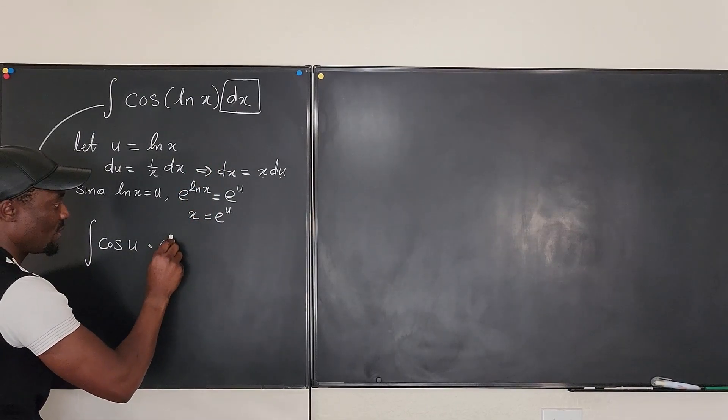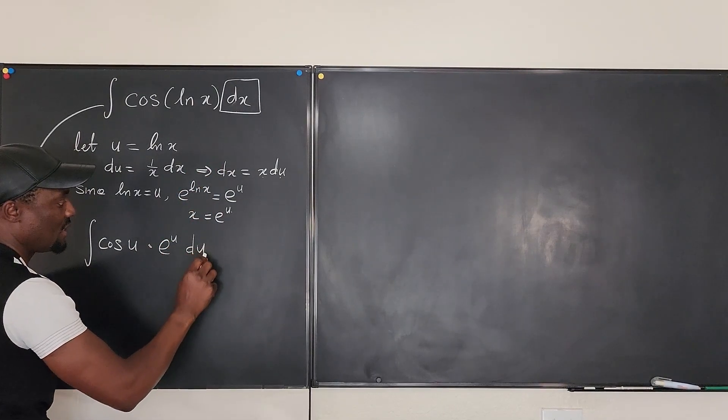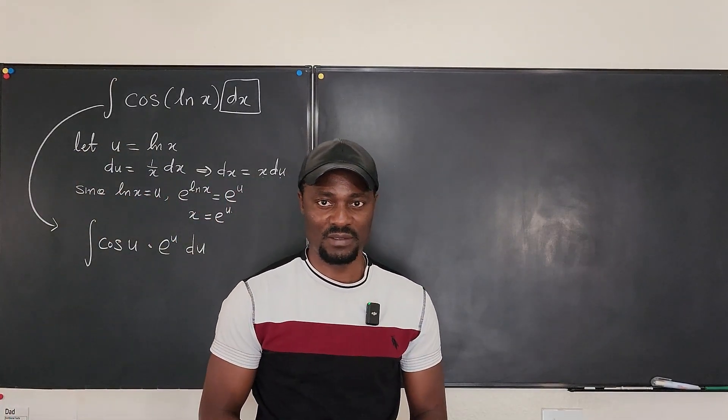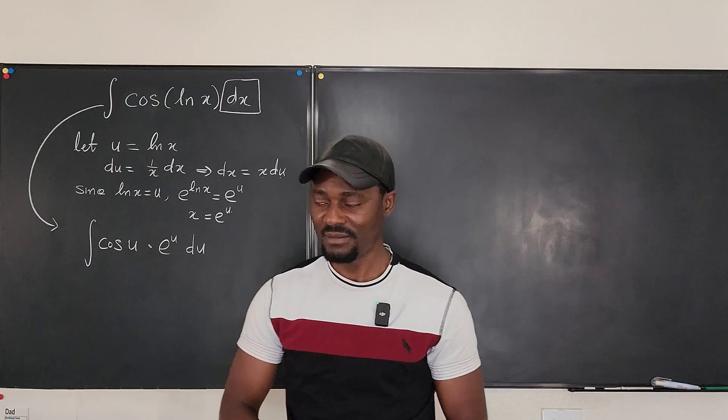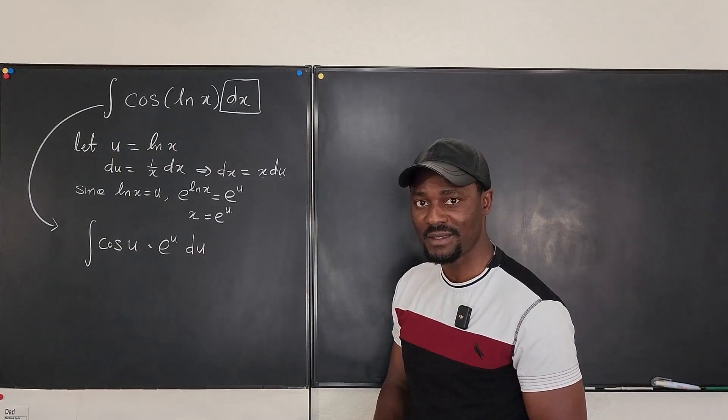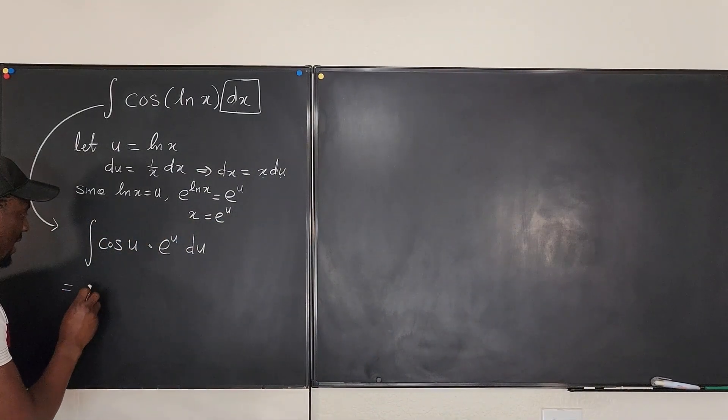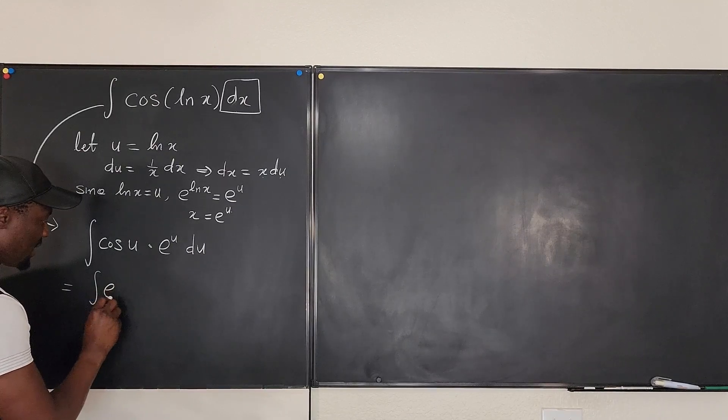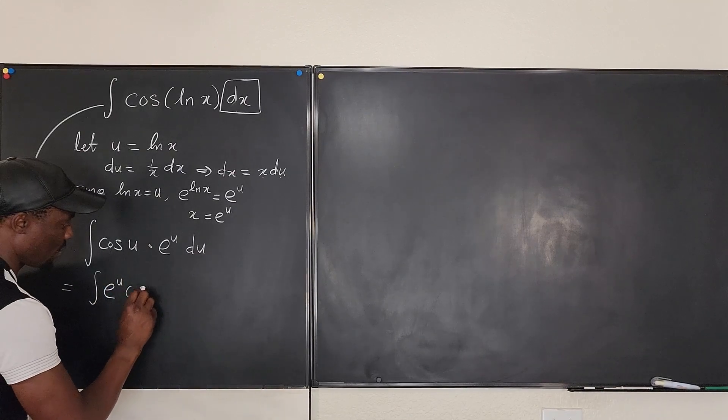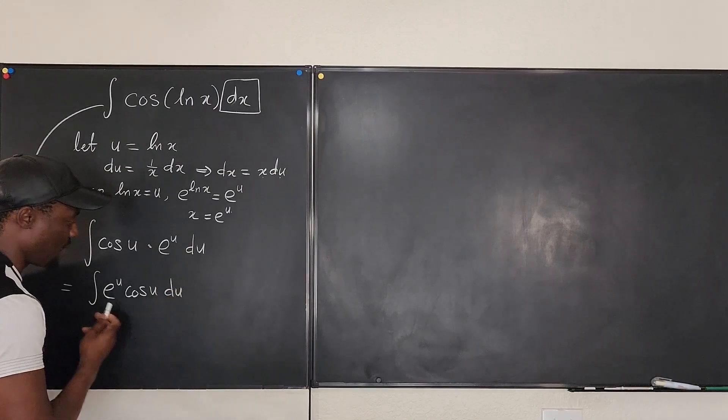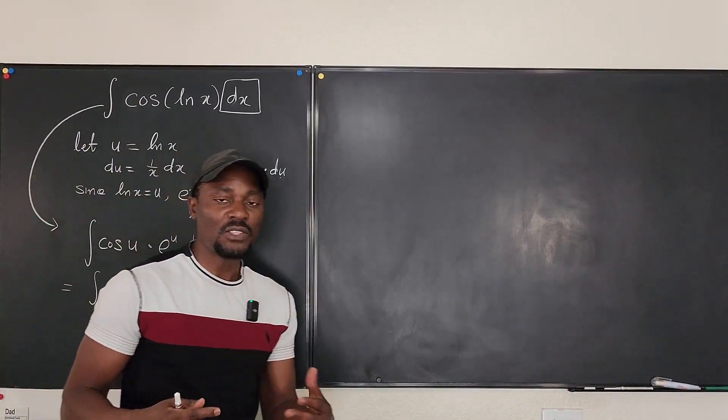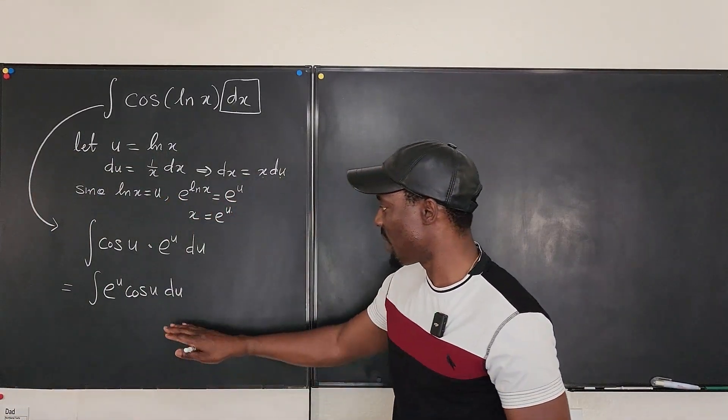So now we're going back to replace this with e to the u du. And now we have a different integral to deal with. That's nice. So let's write this neatly. Let's rewrite it. This is the same thing as the integral of e to the u cosine u du. And I know if you've been doing integration by parts before, you know that this is easy. Just use the DI method.